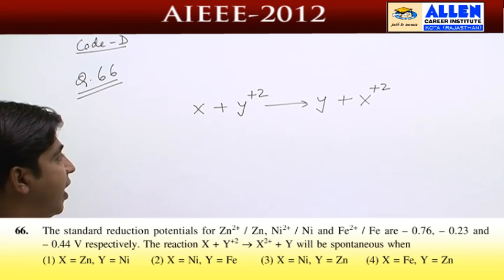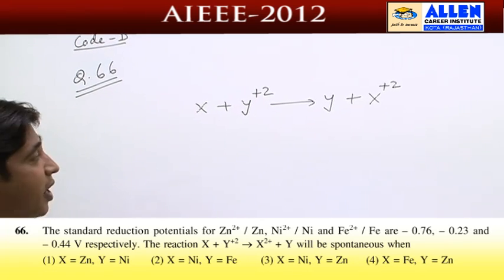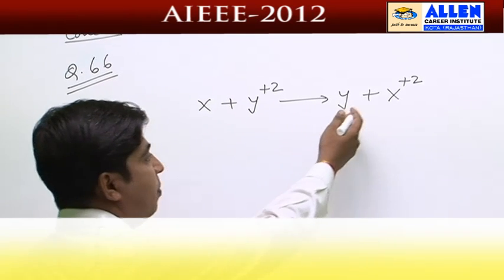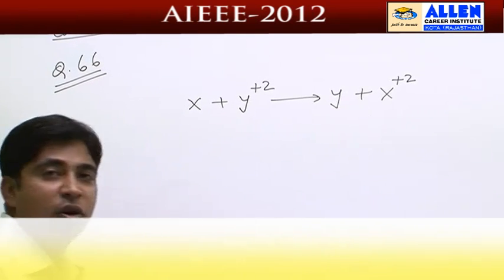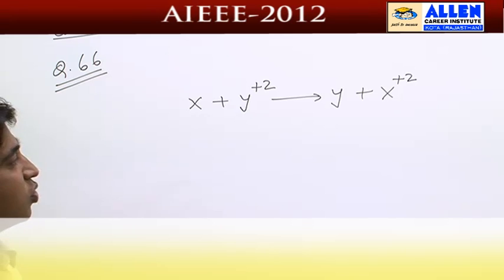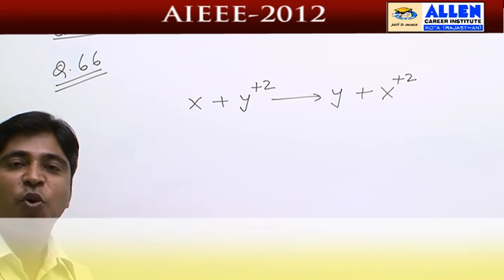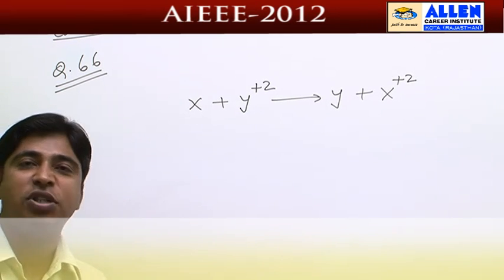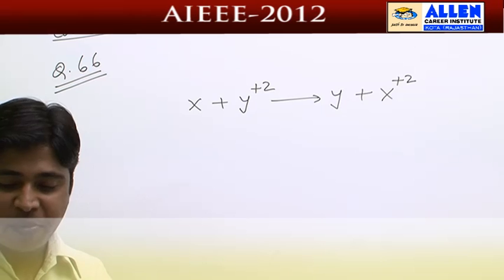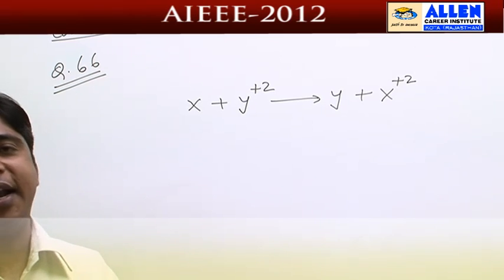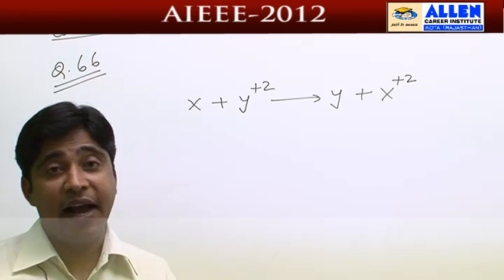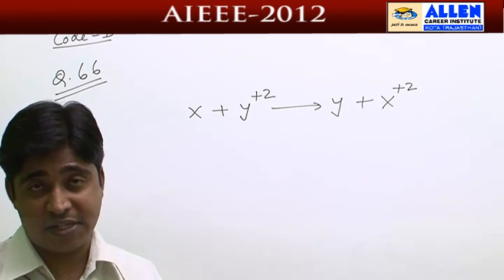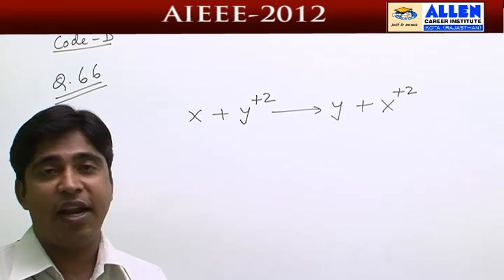The reaction is given: XY₂ reacts to give Y plus X₂. We can check this out for two processes. The question involves zinc, nickel, and iron. Zinc will replace iron and the reaction will proceed accordingly.